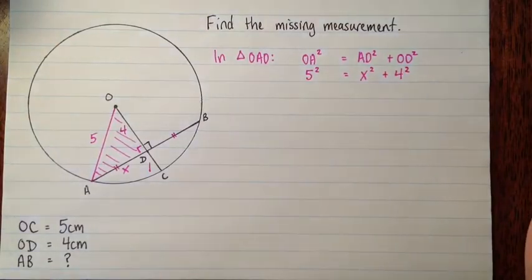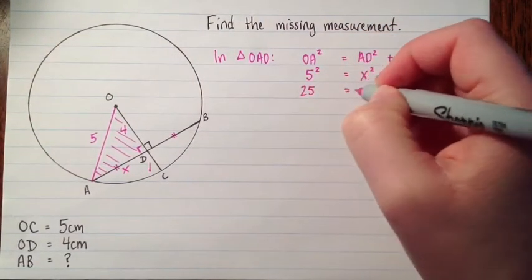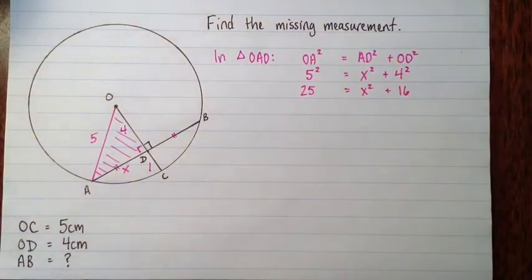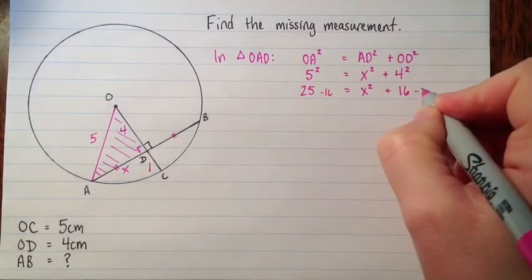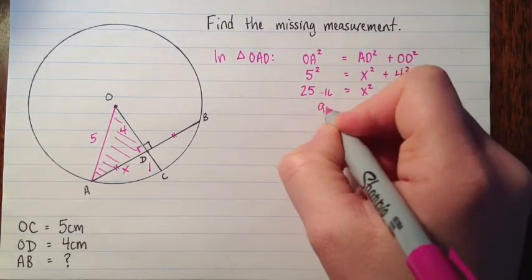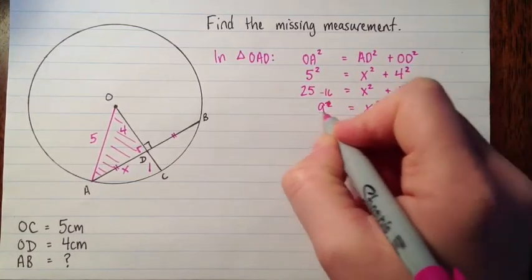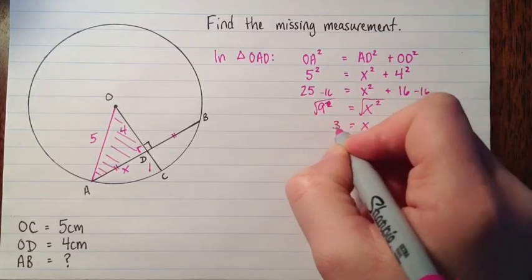And then hopefully you recognize the Pythagorean triple there, but if you don't, we'll just continue. We've got 25 equals X squared plus 16. And then if we subtract 16 from both sides, we've got 9 equals X squared. Take the square roots. We have X equals 3.